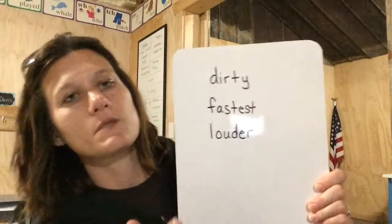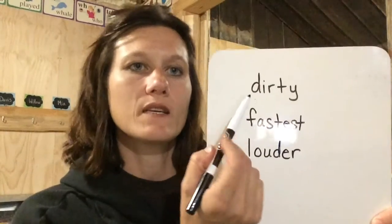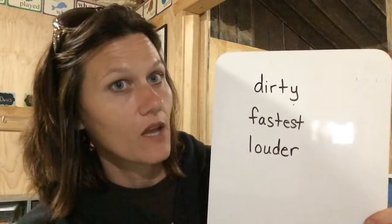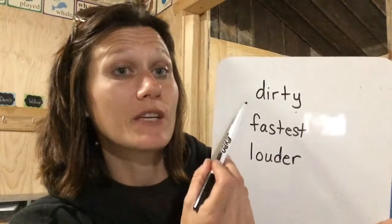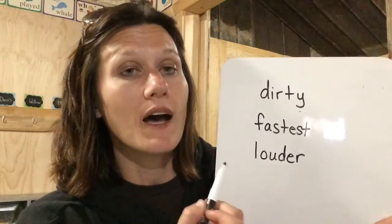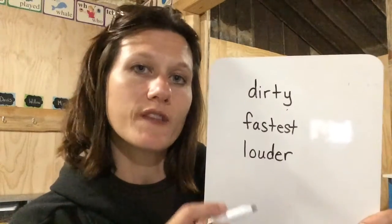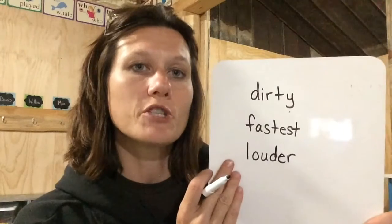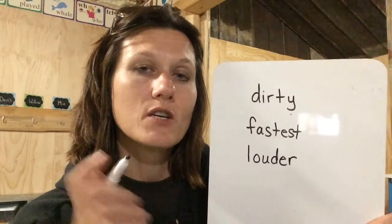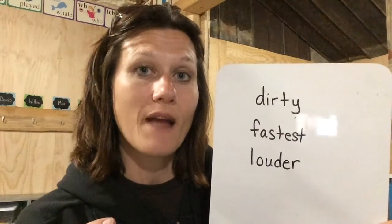Push pause, grab a pencil and a piece of paper. Get something to bear down on if you need it and come back when you're ready. Look at these words. The first one is dirty — you've got the er in bird and the e like in rainy. Write all three of these words on your paper, underline the root words, circle the suffixes, and then push play when you're ready and we will check them.